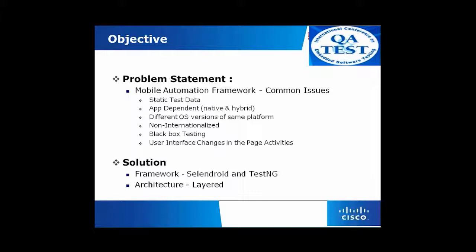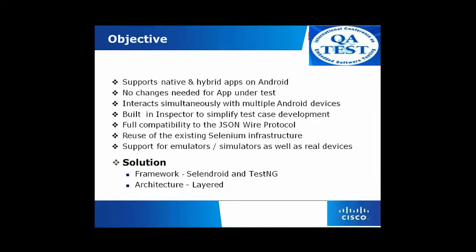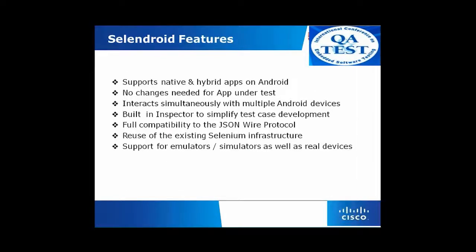Solution: a framework using Cylindroid and TestNG. The architecture is layered. Cylindroid features support both native and hybrid apps on Android, with no changes required for the app under test. It interacts simultaneously with multiple Android devices. Cylindroid provides built-in inspectors to get the locators. It is fully compatible with JSON Wire Protocol and reuses existing Selenium infrastructure, as it is built over the existing WebDriver framework, so the APIs are being reused. It also supports emulators, simulators, and real devices.